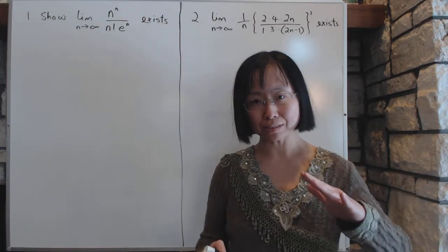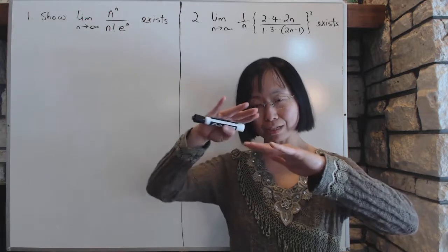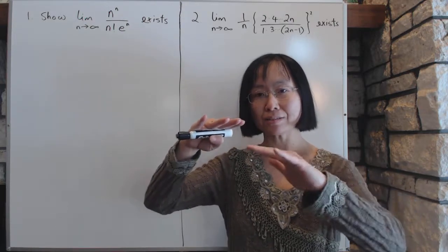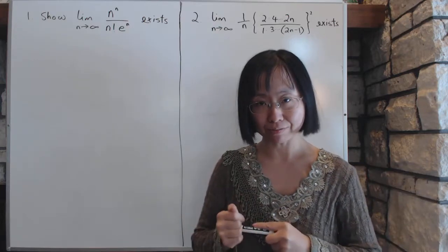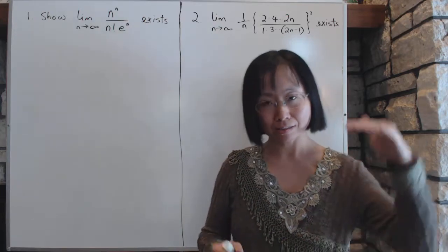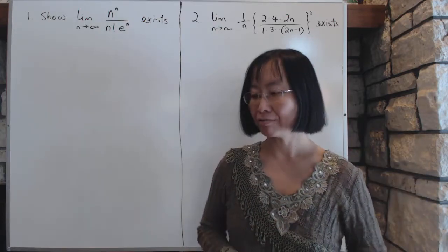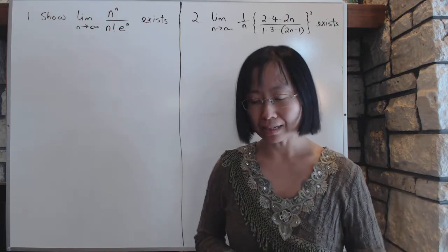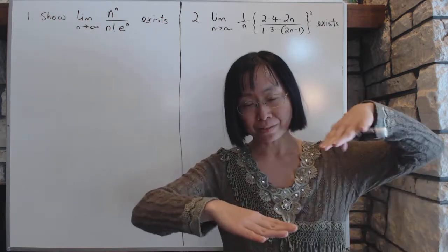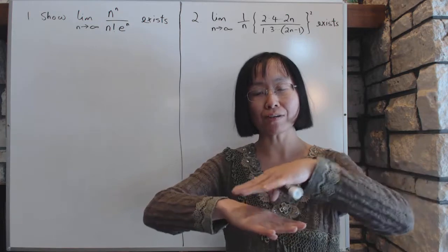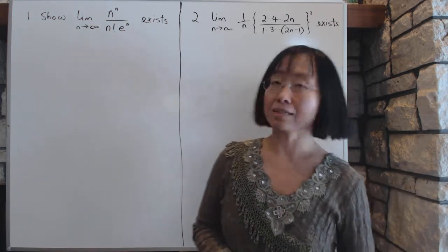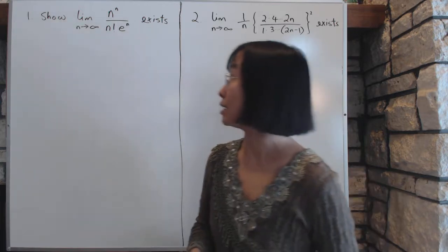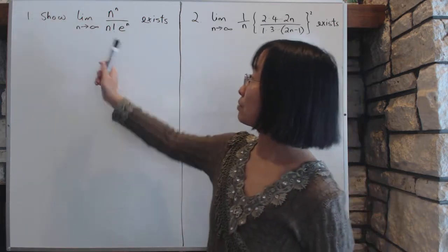The theorem says if you have a sequence that's an increasing sequence with an upper bound, then that sequence is convergent with a least upper bound. That's where it converges to. The theorem is similar for decreasing sequences. As long as bounded from below, a decreasing sequence will converge to its least lower bound. As an example of that theorem, let's do some problems.